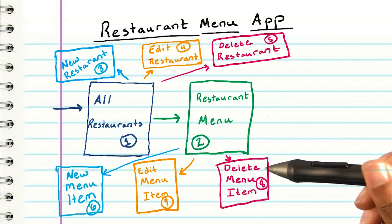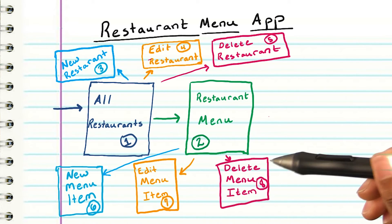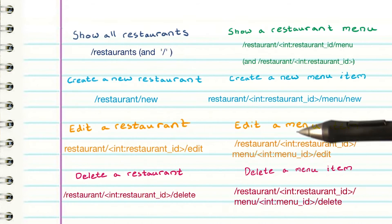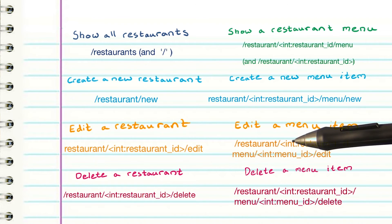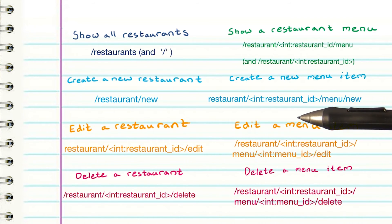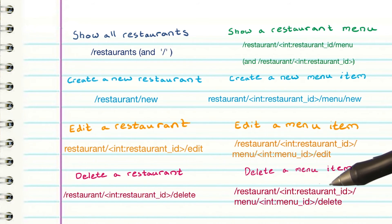So it looks like we need to create eight different web pages for our web app. I will go ahead and specify what I want the URL for each web page to look like as well.